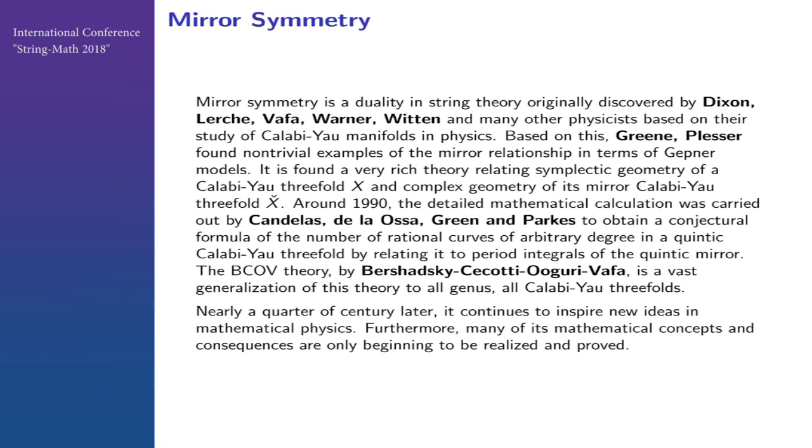They came into my office one day and told me mirror symmetry is a duality. I said this is all ridiculous because the examples I know all have negative Euler number. How could you have equal amounts with positive Euler number? But then Candelas constructed this big table with symmetry. Afterwards, the group led by Philip Candelas constructed this conjecture formula, which was a major problem for a long time.